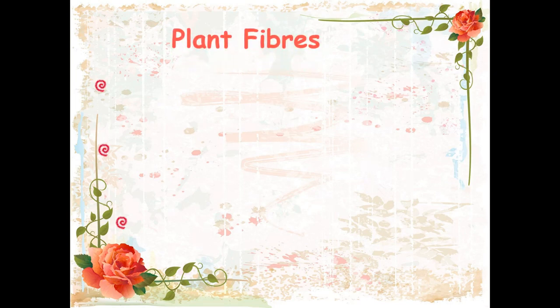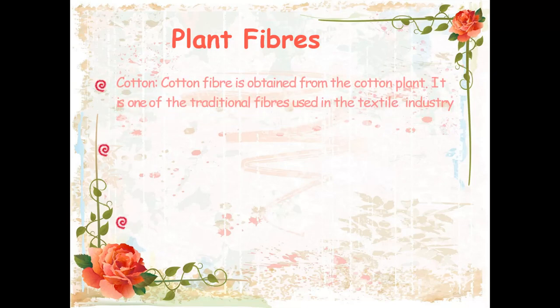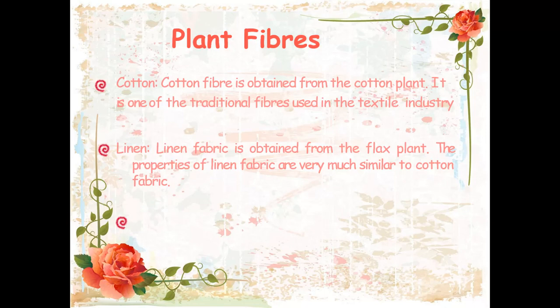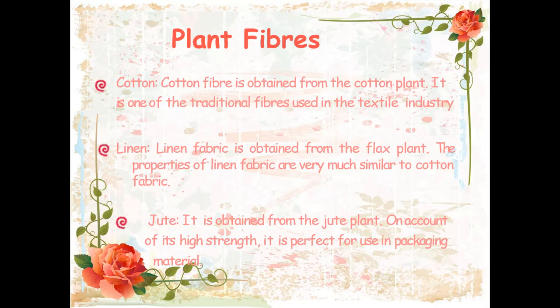Natural fiber is produced in two ways: either by plant fibers or by animal fibers. First, plant fibers: cotton fiber is obtained from the cotton plant and is one of the most common fibers used in textile industries. Linen fiber is obtained from the flax plant, and its properties are very similar to cotton fabric. Jute is obtained from the jute plant and, on account of its high strength, it is perfect for use in packaging materials.